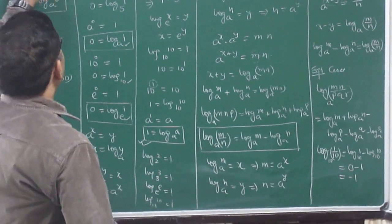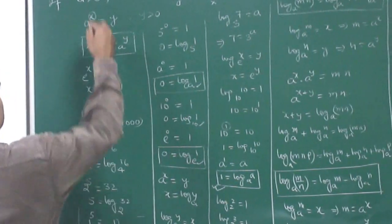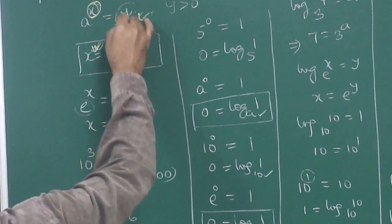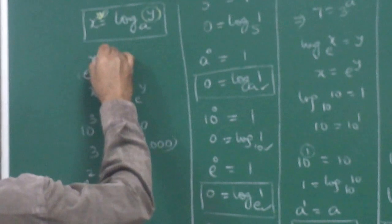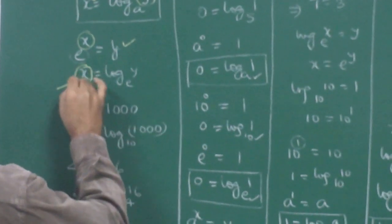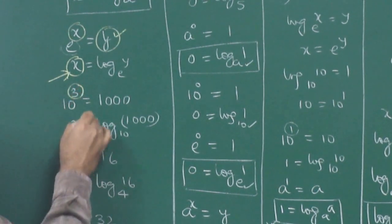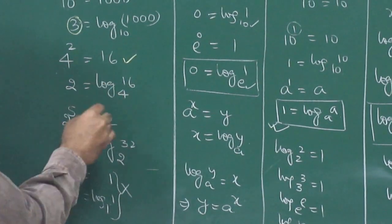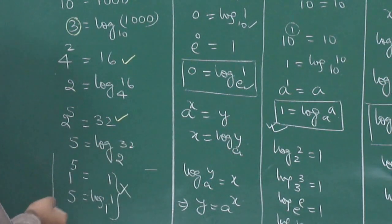The definition is: if a to the power x equals y, then power equals log of the right-hand side to the base a. The base always stays as the base. For example, e to the power x equals y means x equals log y to the base e. Similarly, 10 to the power 3 equals 1000, so 3 equals log 1000 to the base 10. 4 to the power 2 is 16, so 2 equals log 16 to the base 4. 2 to the power 5 is 32, so 5 equals log 32 to the base 2.